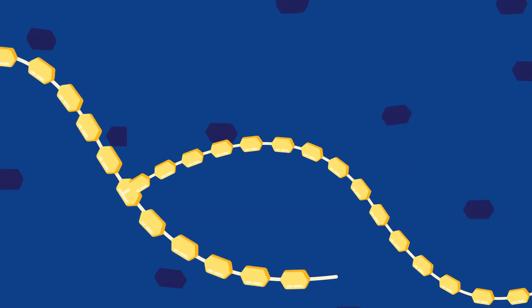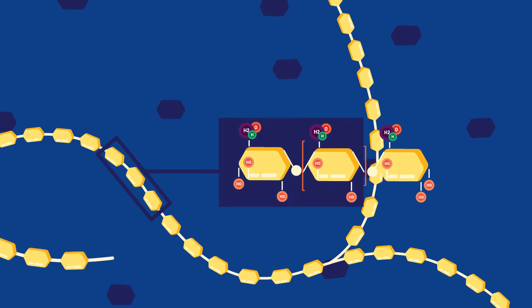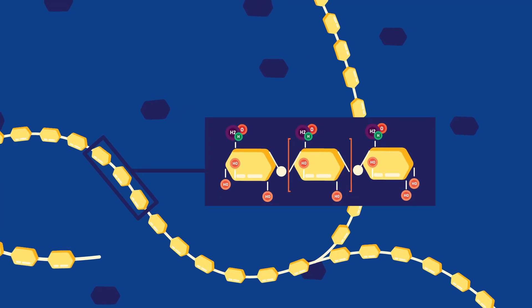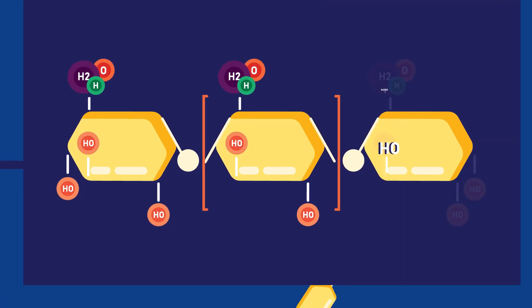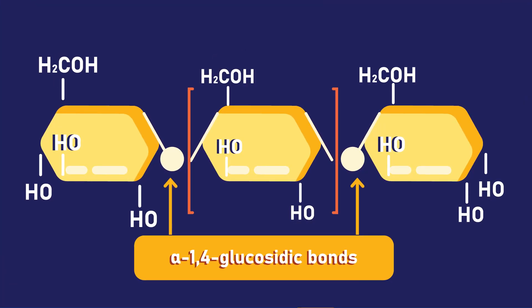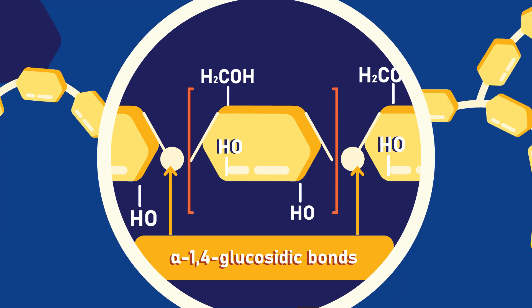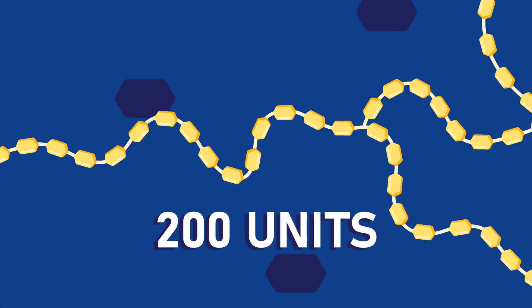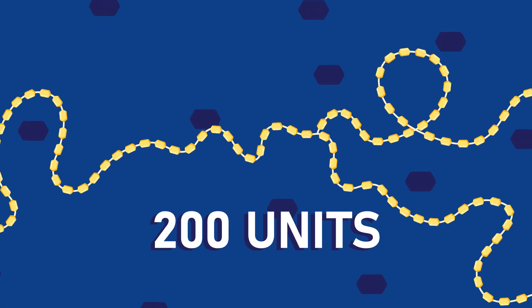These chains are a composition of straight and branched chains. The glucose units are linked by bridges or chemical bonds, which may contain as many as 200 glucose units.